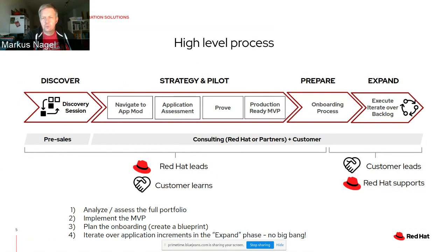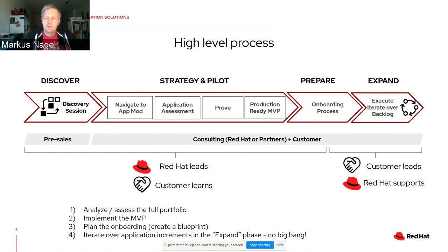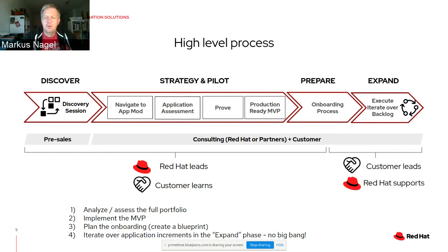In the expand phase, what we call a factory approach will pan out into multiple parallel projects as you see fit. Typically in the first part, we're in the leading role together with the customer. In the later parts, we more and more phase over to the customer in the leading role, where we just support the endeavor.